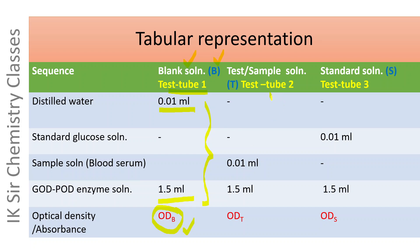In test tube number 2, test or sample solution is taken. It contains 0.01 ml blood serum and 1.5 ml GOD-POD enzyme solution which also contains 4-amino-antipyrine and phenol. These two solutions are mixed together well, incubated at 37 degrees centigrade for 25 minutes, and then its optical density is measured at 500 nanometers, denoted by ODT — that is optical density of the test or sample solution.